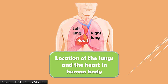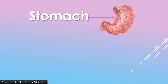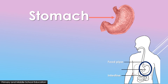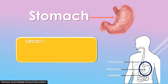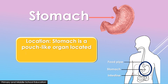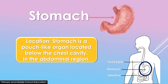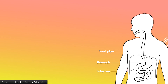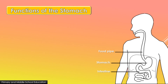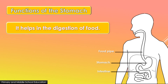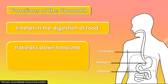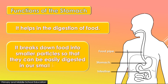Here we can see the location of the lungs and the heart in the human body. The next internal organ is the stomach. Stomach is a pouch-like organ located below the chest cavity in the abdominal region. The stomach helps in the digestion of food. It breaks down food into smaller particles so that they can be easily digested in our small intestine.